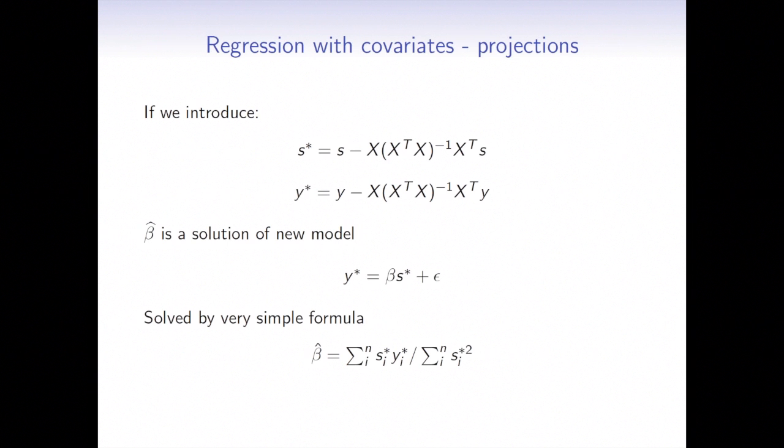So what we do here, we introduce the new variables, a new SNP variable S star, and new response Y star. And here you see the formula for those transformed variables. And although at the beginning they may look complicated, but they are actually based on projections. So we just leave the parts of the variables that are orthogonal to the space